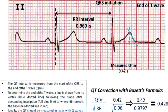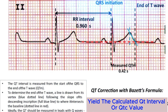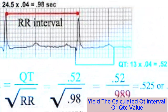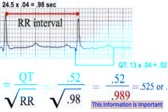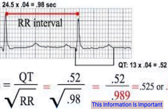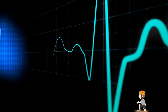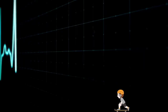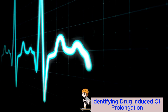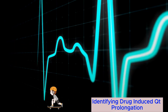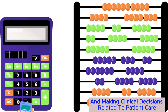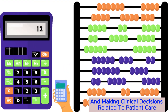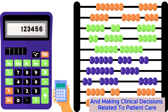4. Yield — finally, yield the calculated QT interval or QTc value. This information is important for assessing the risk of arrhythmias, identifying drug-induced QT prolongation, and making clinical decisions related to patient care.